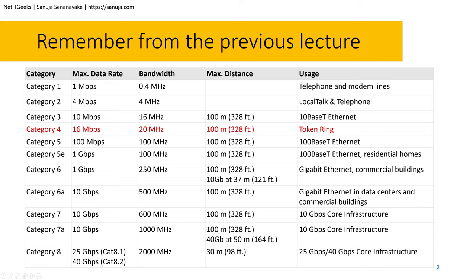Recall from my previous lecture the reason why we use these categories — to standardize the minimum bandwidth and data rates, as well as the maximum distance. For example, if you buy a Category 5e cable, you are expected to have a maximum data rate of one gigabyte per second, with a bandwidth of 100 megahertz and up to 100 meters. This categorization gives us a guarantee of minimum standards for each type.